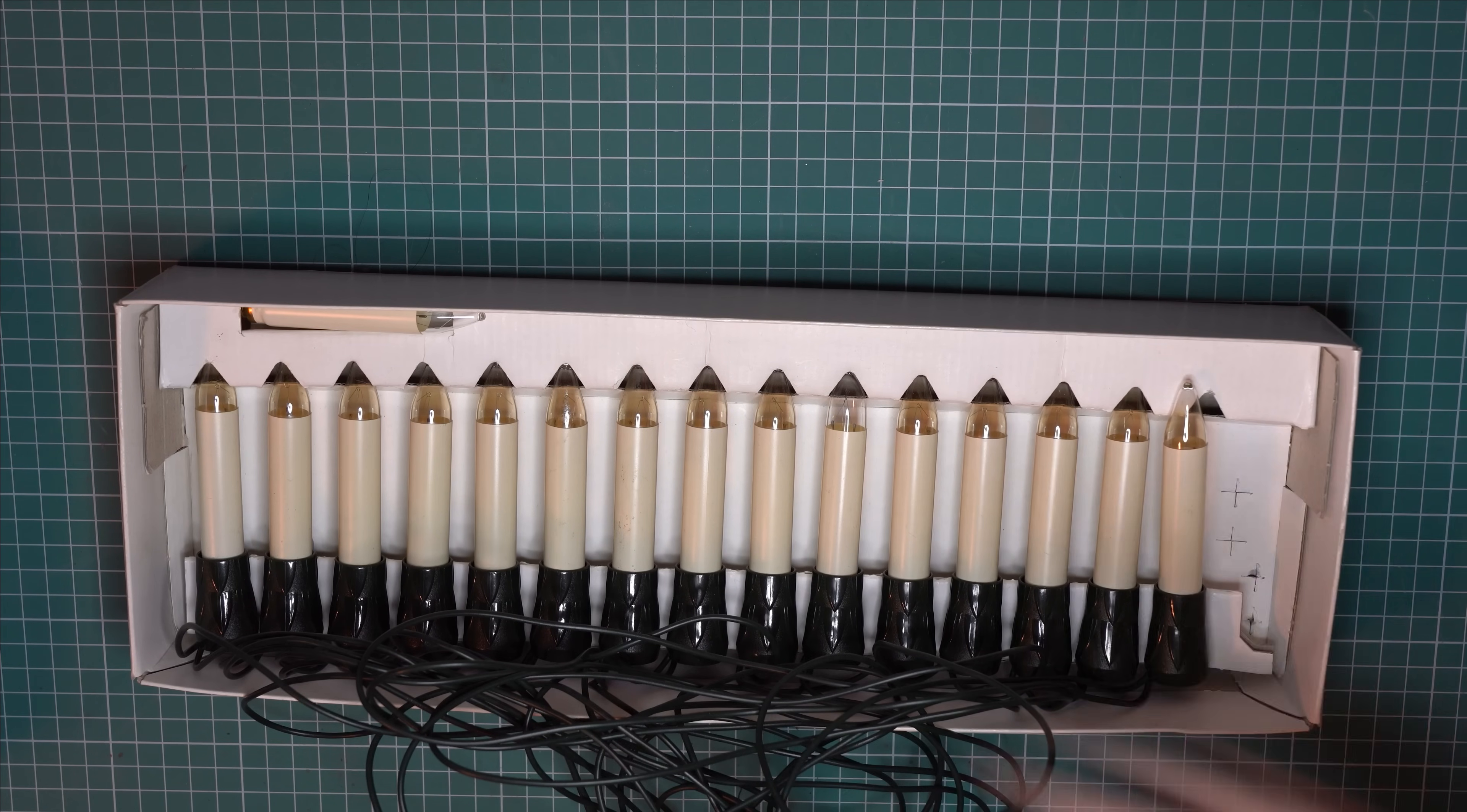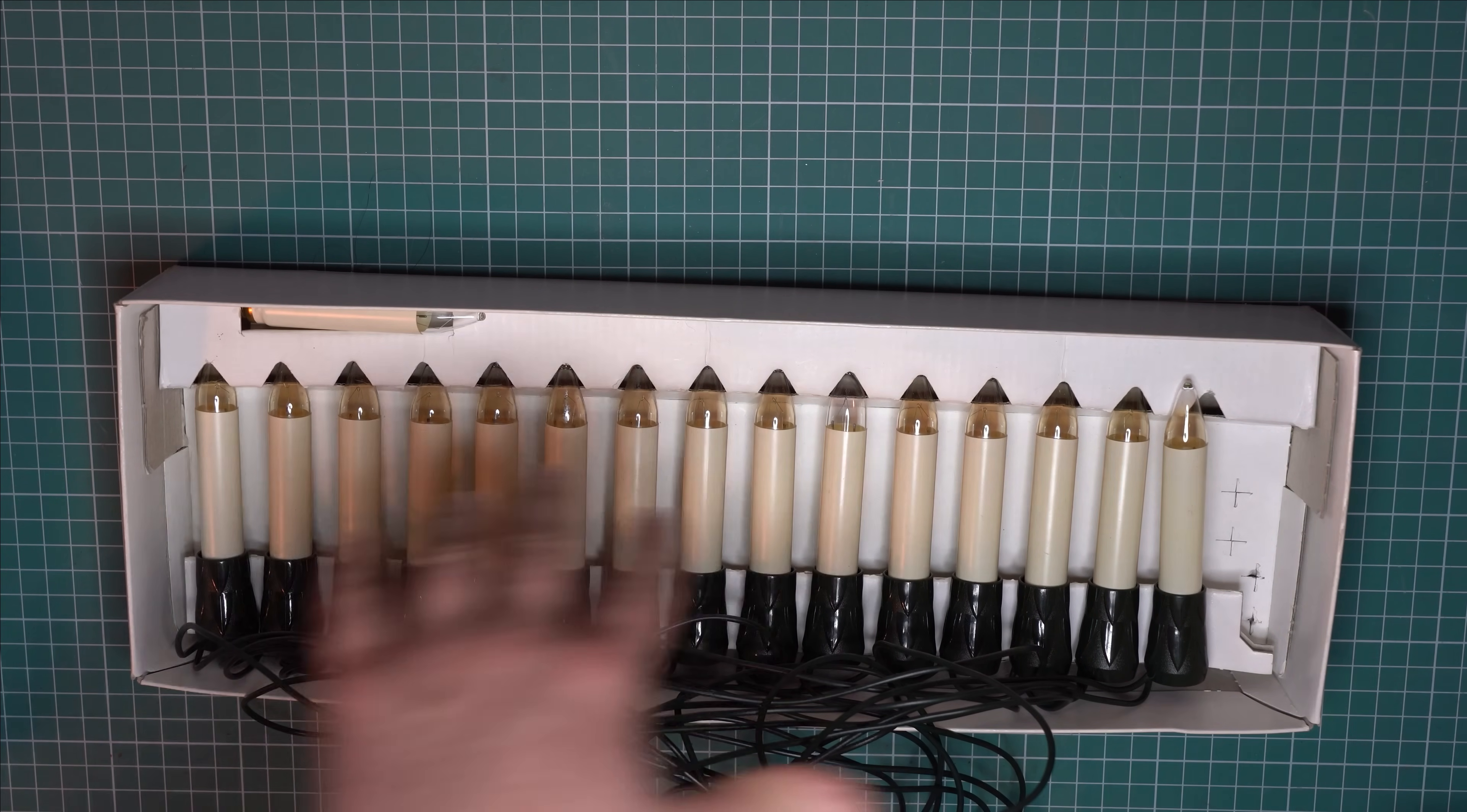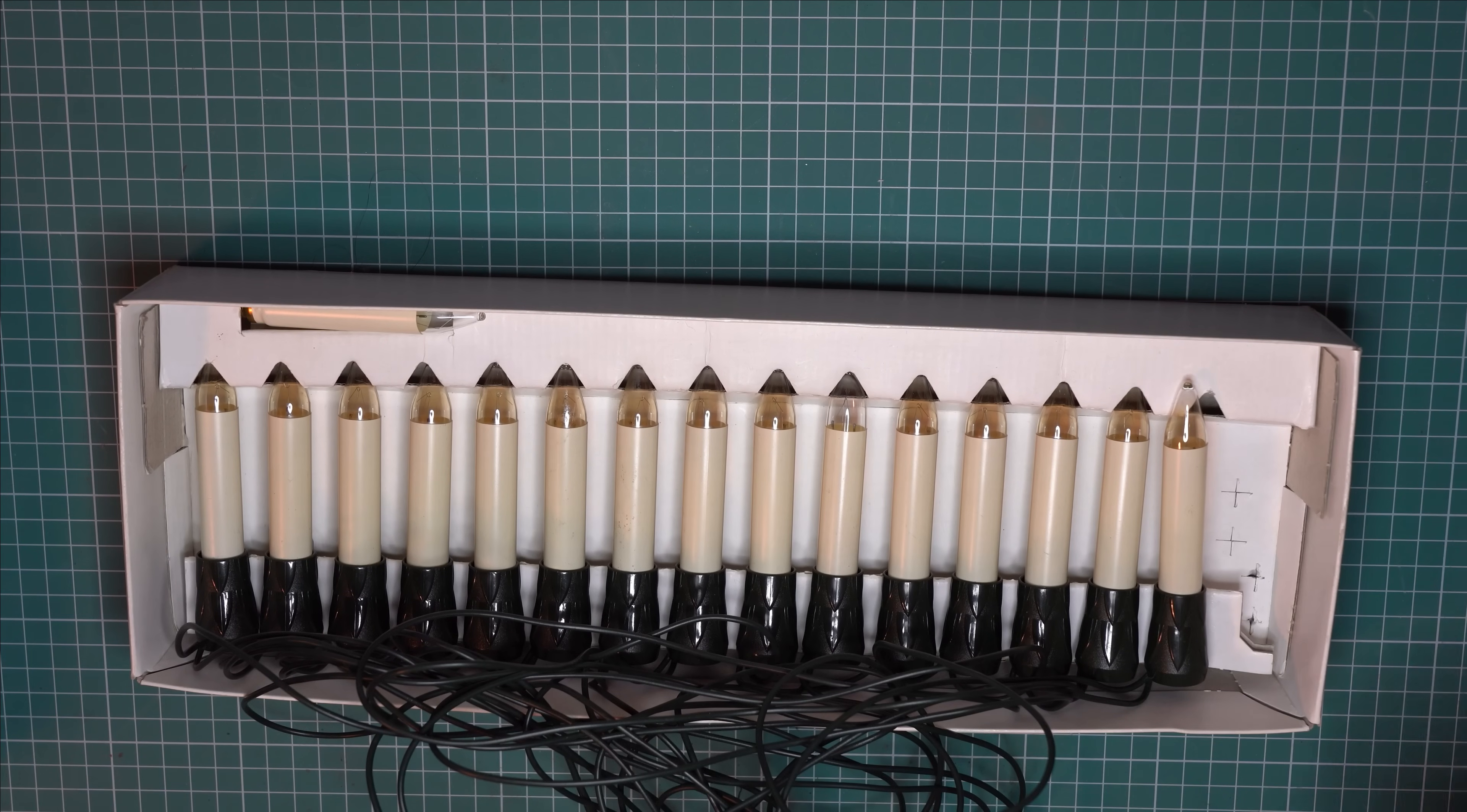Since the lights are all in series and they're all identical, the mains voltage distributes equally across every single light, so that means they have to run at a lower voltage. In our case for a mains voltage of 230 volts and 15 lights, each light gets around 15.3 volts.